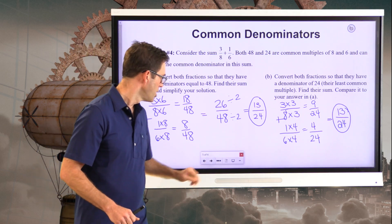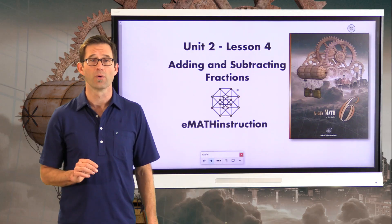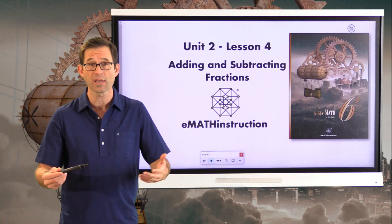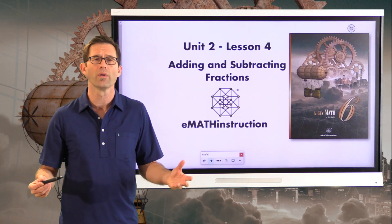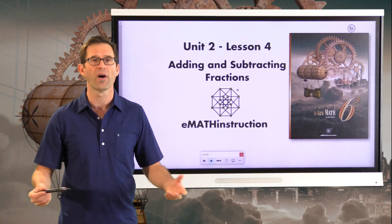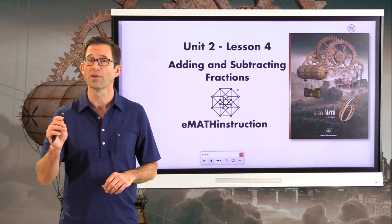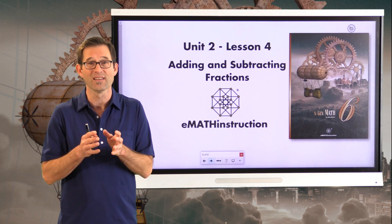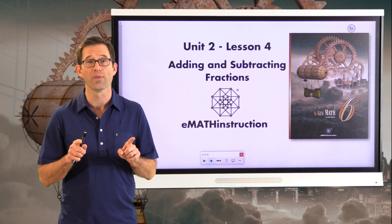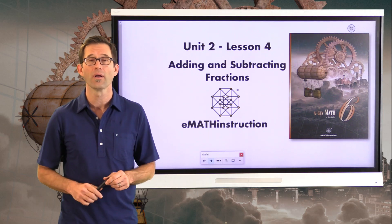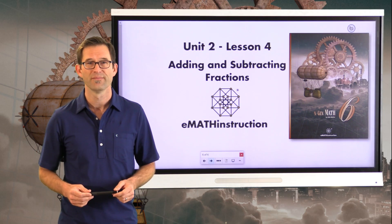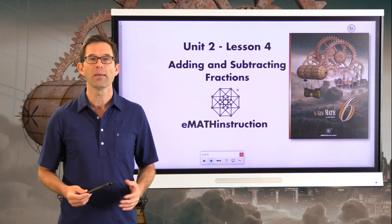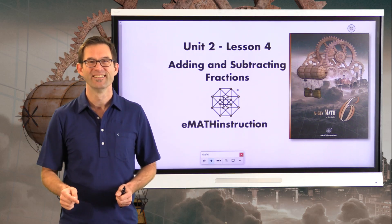To wrap up: you've been adding fractions for a few years, so this should be review. The fundamental idea is that adding or subtracting fractions with the same denominator makes intuitive sense — 3 sevenths plus 2 sevenths is 5 sevenths. But 3 sevenths plus 2 thirds is harder because the denominators differ. We can always form equivalent fractions with a common denominator, and then adding or subtracting is easy. Thank you for joining me for another NGen Math 6 lesson by eMath Instruction. Until next time, keep thinking and keep solving problems.